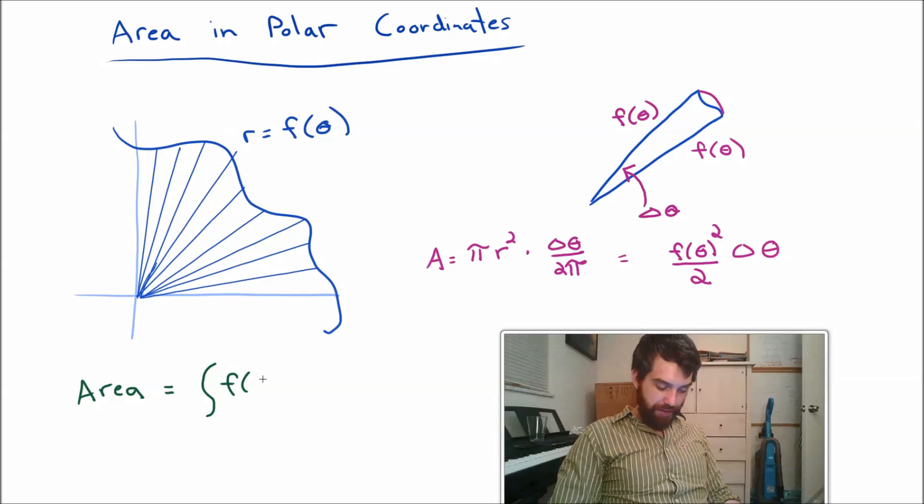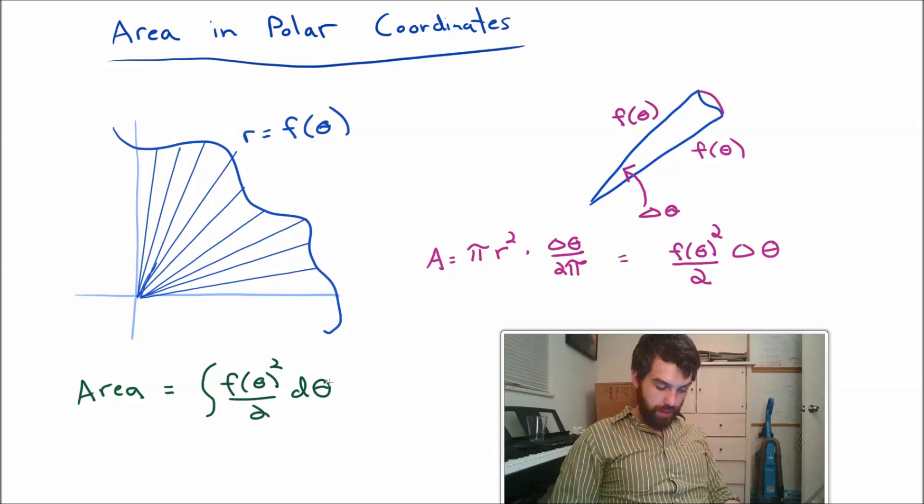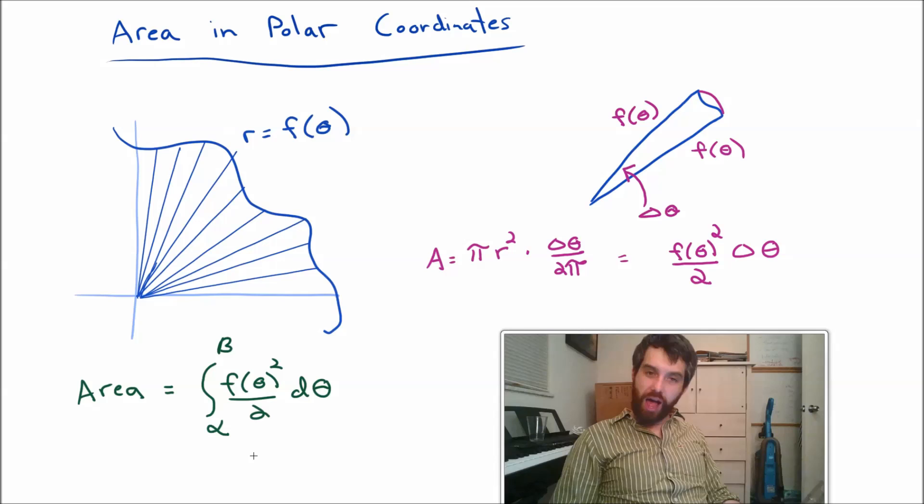It is going to be the integral of f of theta squared divided by 2 d theta. And finally, I need to give some limits of integration. I'm going to let those limits be an alpha and a beta. And I think that my region is going to be defined by the angles theta going from theta equal to alpha up to theta equal to beta. And so there I have it. I have a formula for the area when I have a curve given in polar coordinates.